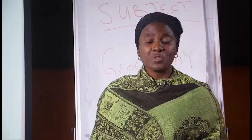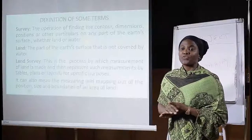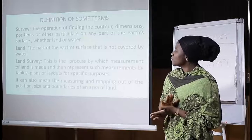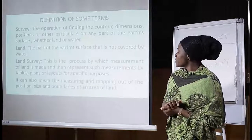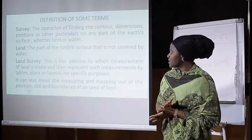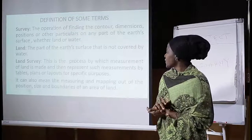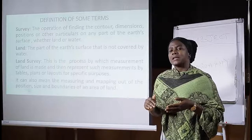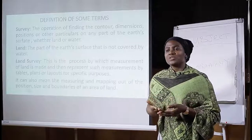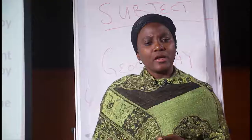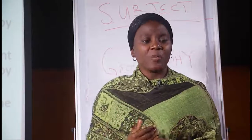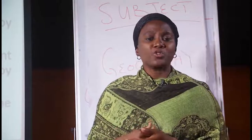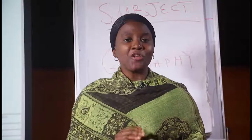We were able to define some terms — land and surveying. We said land survey is a process by which measurement of land is made and then represents such measurements by tables, plans, or layouts for specific purposes. This involves the measurement of land, and we said land is the part of the earth's surface that is not covered by water. When you take these measurements, you have to put them in either tables, plans, or layouts. We were also able to look at a picture of what a table and a plan looks like.